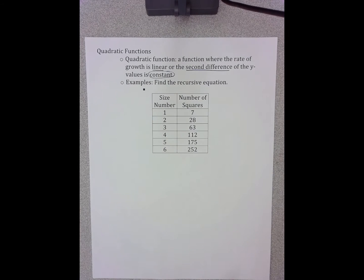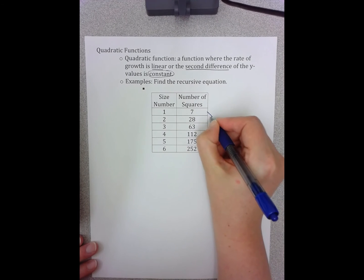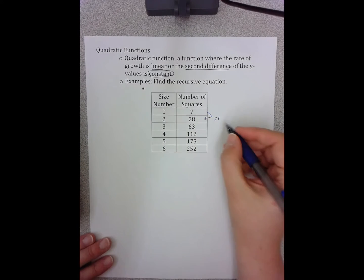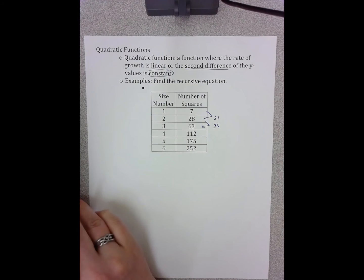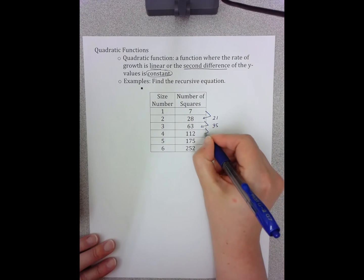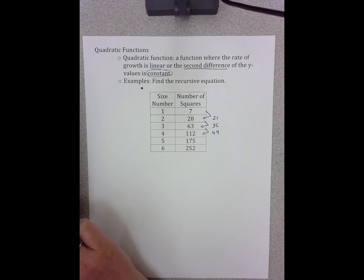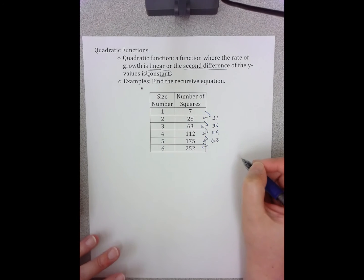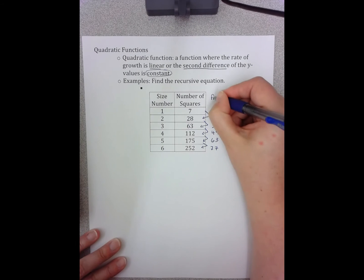I am going to find the first and second differences here. I'll grab a calculator to make these calculations a little bit easier. To go from 7 to 28, I'm adding 21. To go from 28 to 63, I'm adding 35. From 63 to 112, I'm adding 49. From 112 to 175, I'm adding 63. And 175 to 252, I'm adding 77. We label this as our first difference.